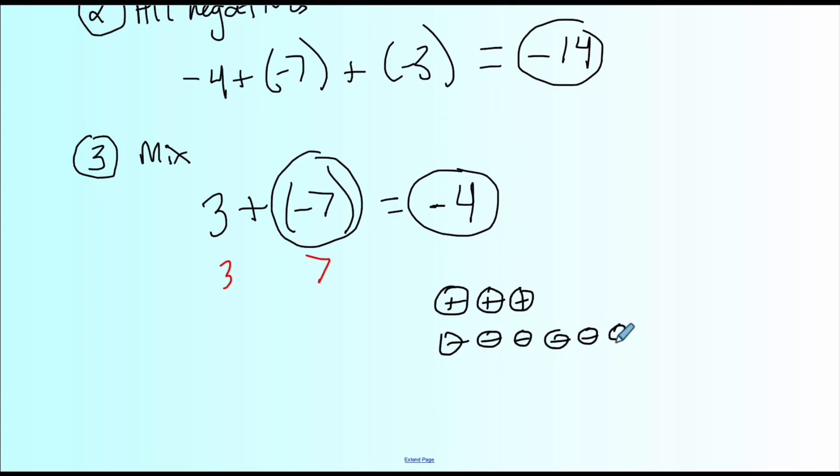And whichever one has more chips, so cancel out, cancel out, cancel out, there's four negatives left. That's why my answer is -4.